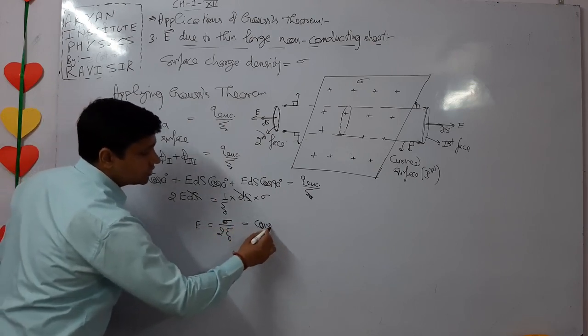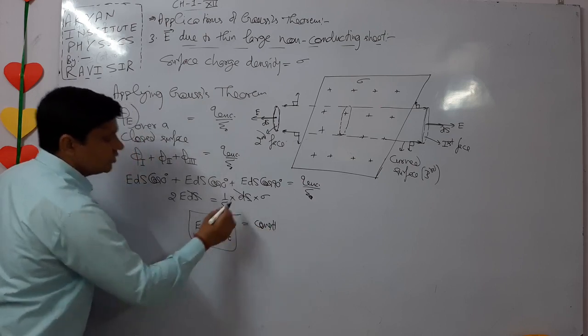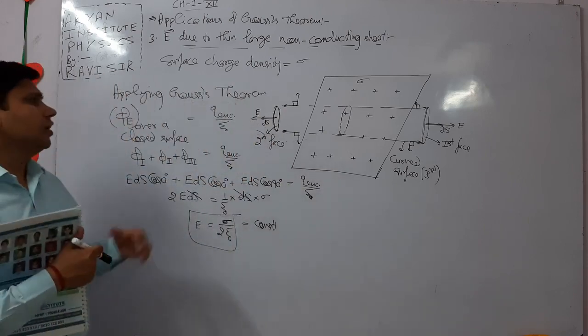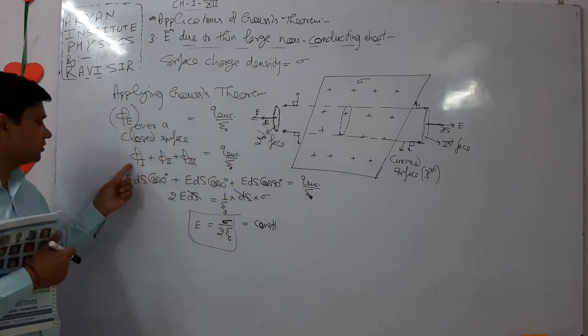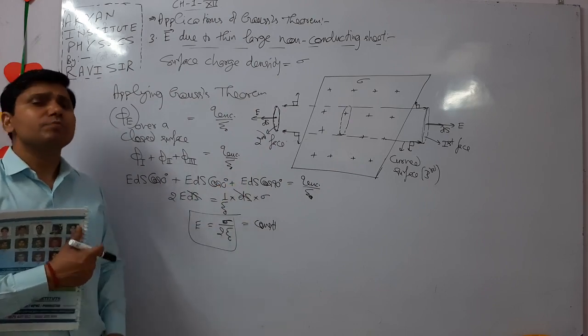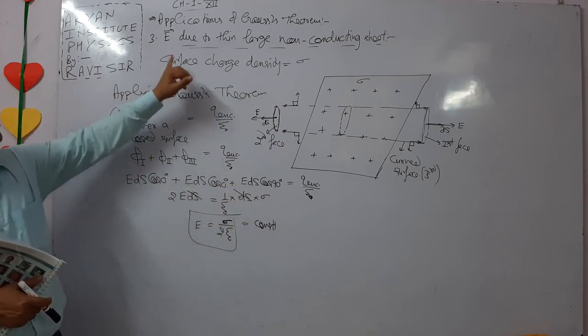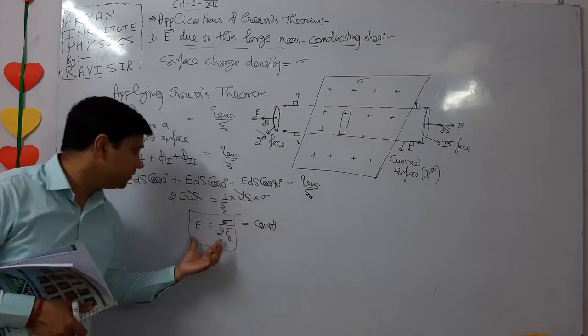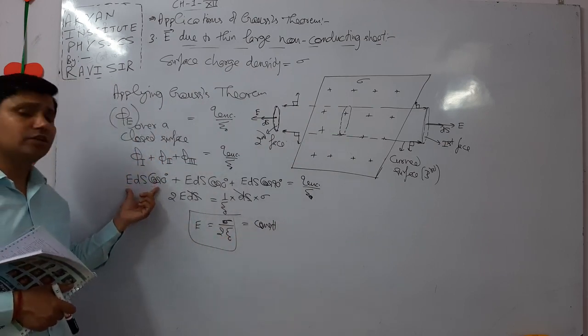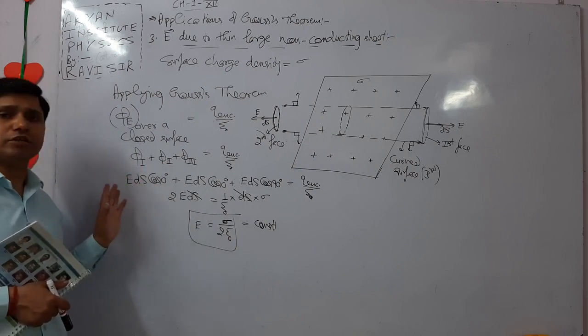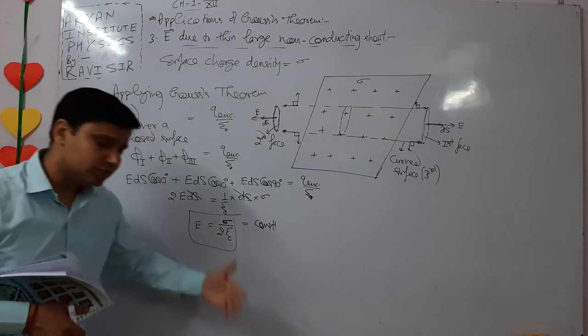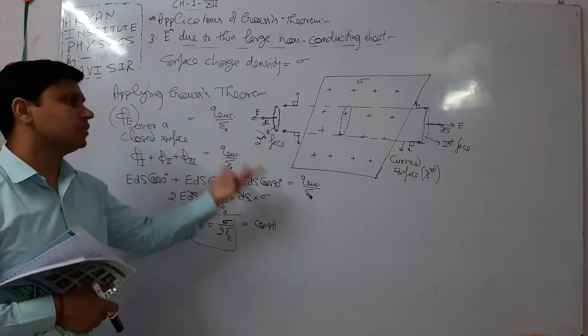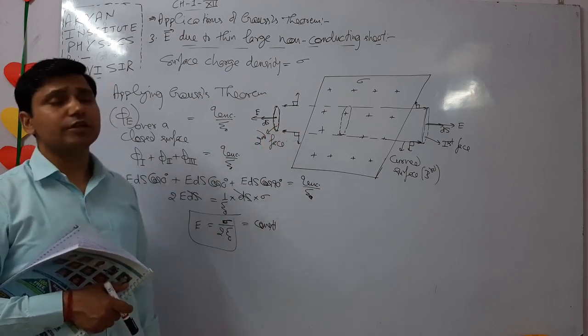So 2E·dS equals dS into sigma by epsilon naught. dS cancels, and electric field intensity becomes sigma by 2 epsilon naught, which is constant. So the electric field for a thin large non-conducting sheet is constant.